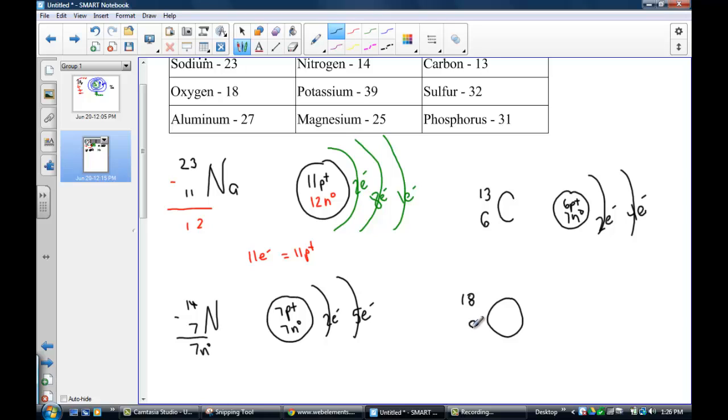But again, its atomic number is eight. So I'll just change color here. Here we can get our eight positive protons inside the nucleus. Eighteen minus eight is ten neutral neutrons inside the nucleus. So the sum of those two particles matches the mass number.